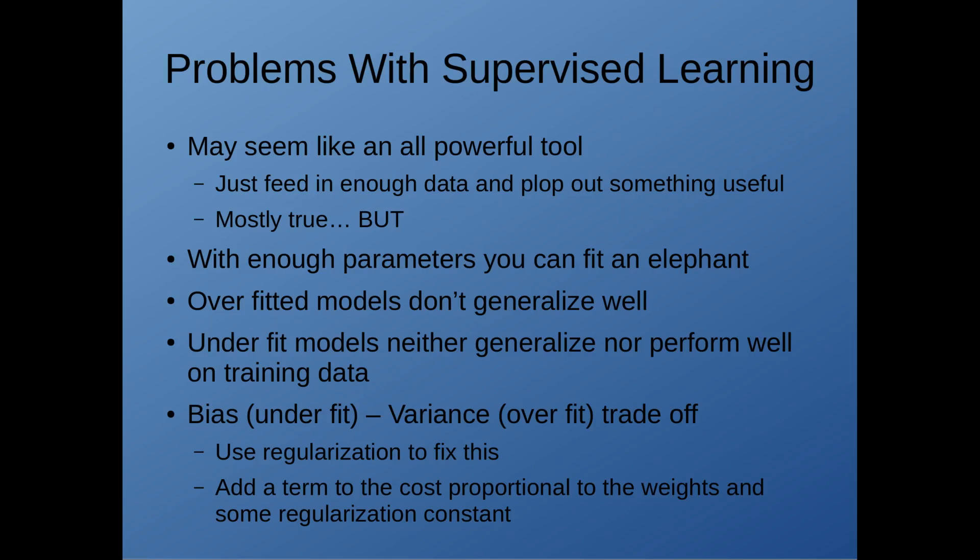The one main technique used to fix this is something called regularization. This is where you add a term to your cost function that's proportional to the weights and some constant. And the magnitude of that constant determines the penalty you associate with overfitting to the data. So by picking an arbitrarily large number of parameters, you end up adding in a significant cost to your model. We didn't touch on this because it's somewhat of a detail and it's something you incorporate when you end up doing actual computations.